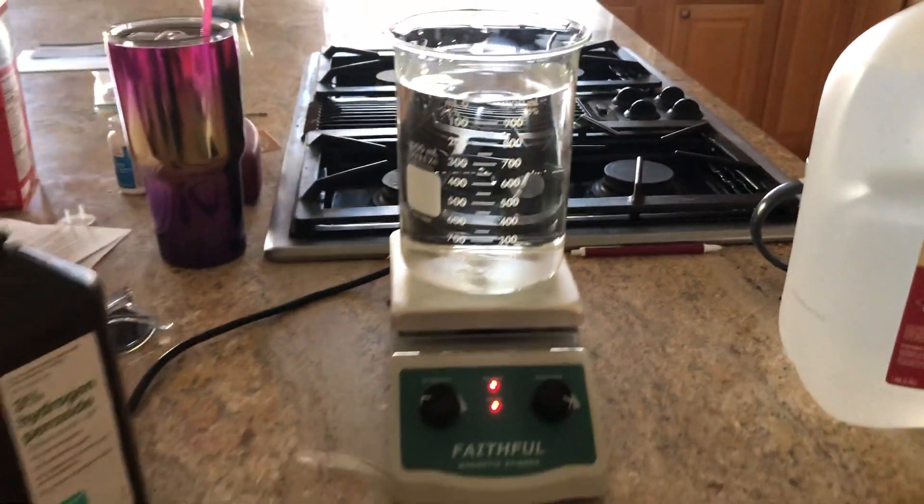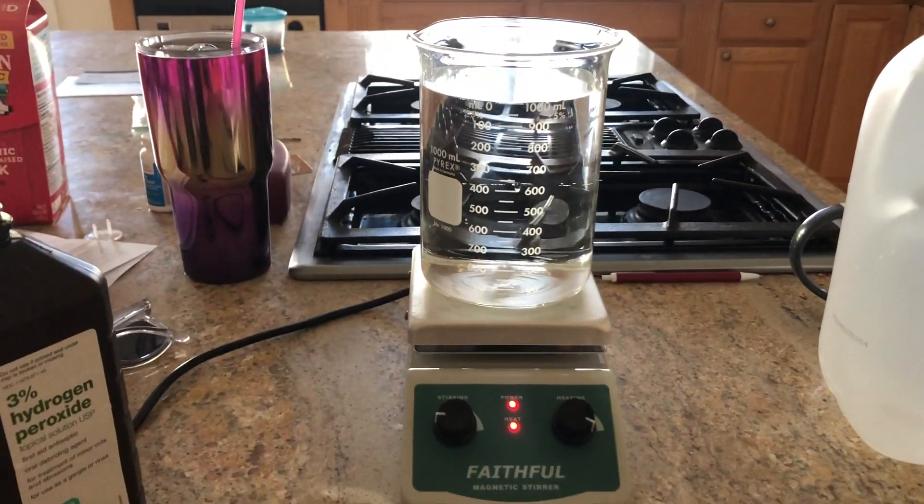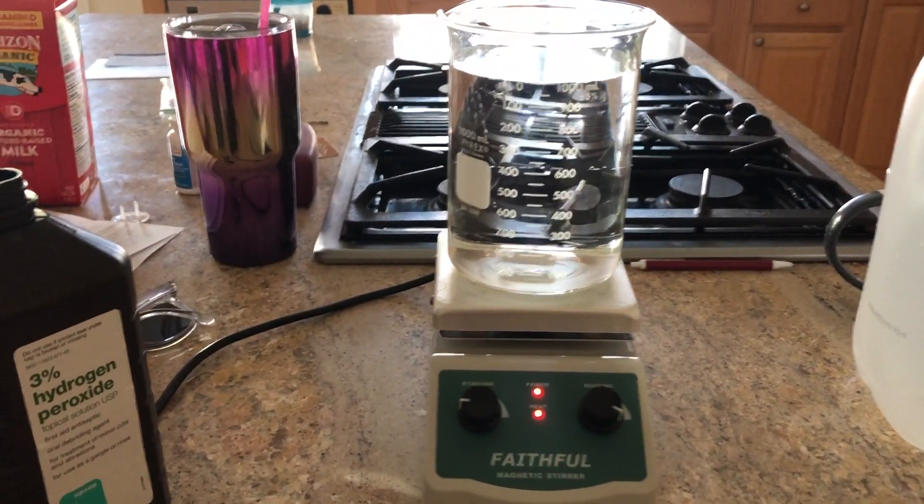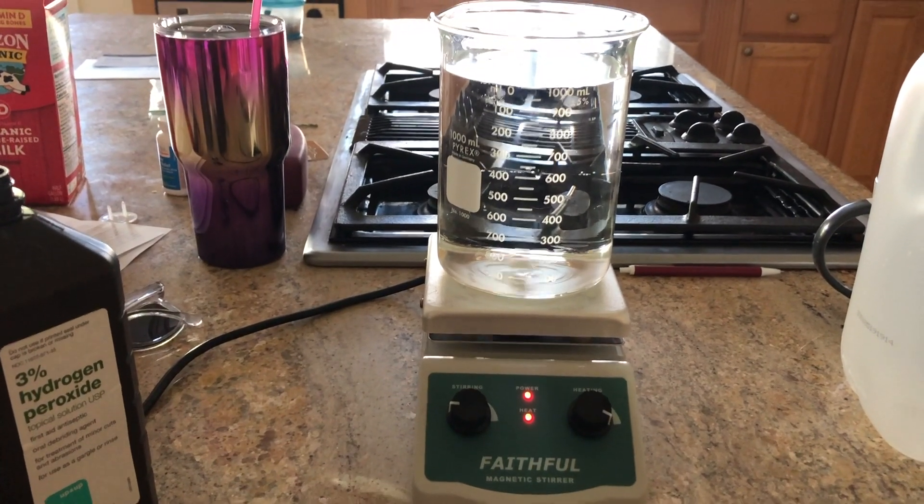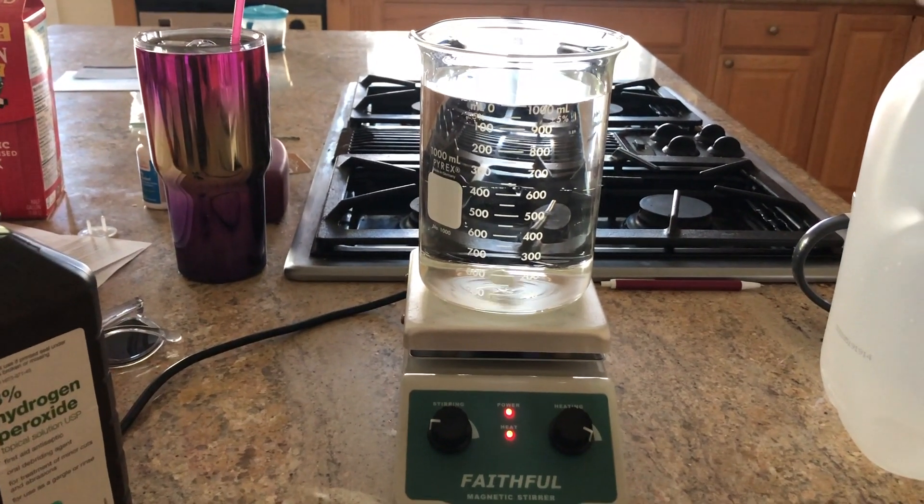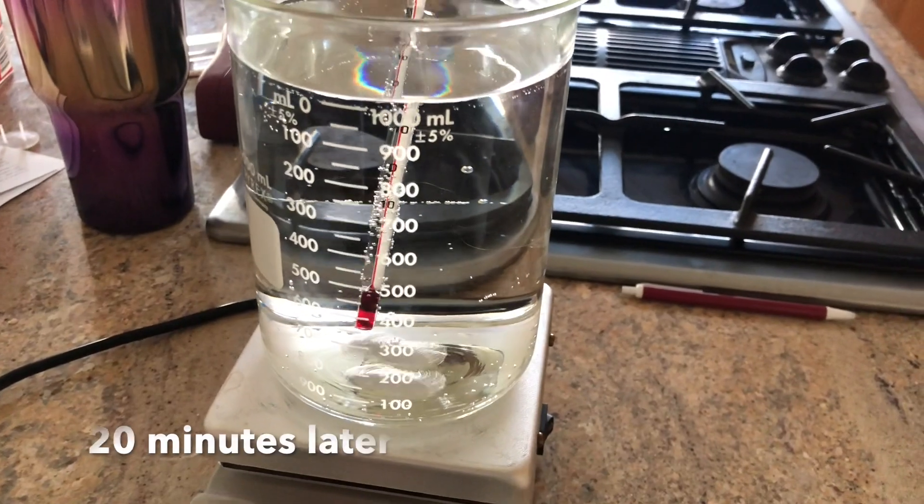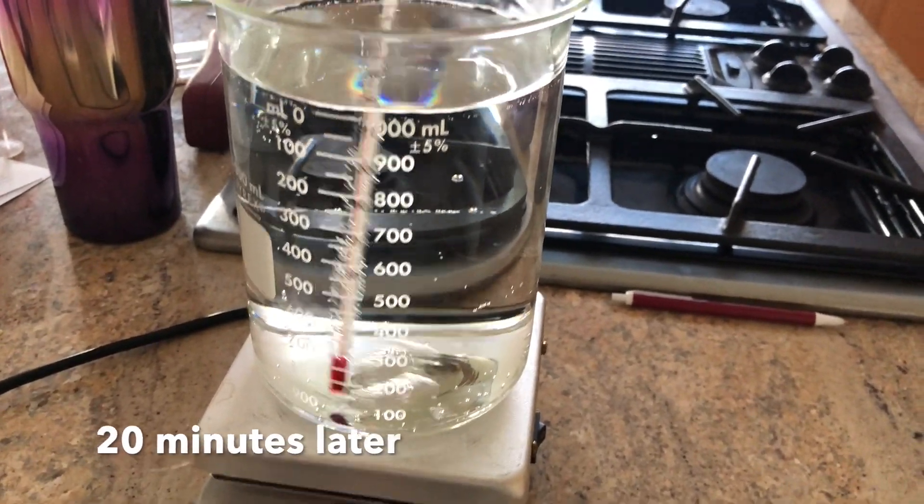We're gonna boil one liter down to 100 milliliters a couple times so we end up with about 300 milliliters and then we'll take it up to 90%. Right now we're still only about 54 degrees.